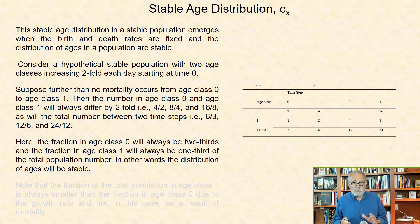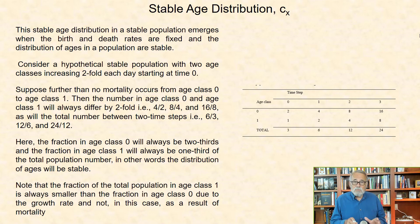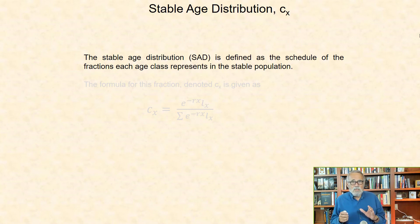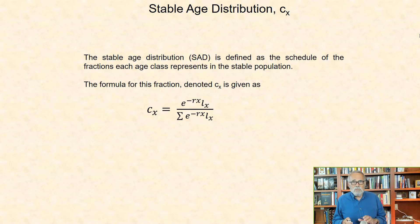Here, the fraction in age class 0 will always be two-thirds of the fraction in age class 1, which will be one-third of the total population number. In other words, the distribution of the number in each age class will be stable. Note that the fraction of the total population in age class 1 is always smaller than the fraction in age class 0, due to growth rate and not, in this case, as a result of mortality. The stable age distribution, acronym SAD, is defined as the schedule of the fractions each age class represents in the stable population. The formula for this fraction, denoted Cx, is given by the formula where Cx equals exp(-r*x)*Lx, divided by the sum of this expression over all ages. This relationship for the fraction of individuals age x in a population becomes apparent when the exponential term is dropped, and thus the expression becomes Lx divided by the sum of Lx.